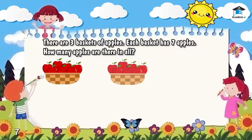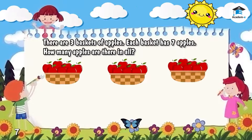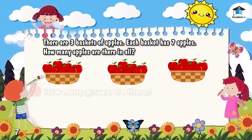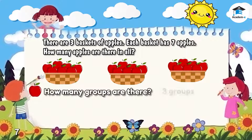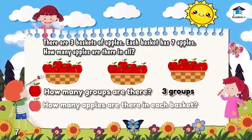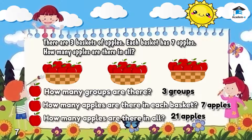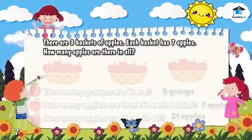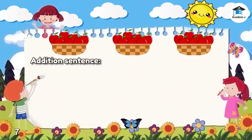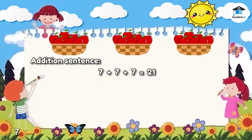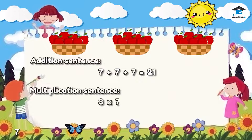There are 3 baskets of apples. Each basket has 7 apples. How many apples are there in all? Questions: How many groups are there? There are 3 groups. How many apples are there in each basket? There are 7 apples in each basket. How many apples are there in all? There are 21 apples in all. In addition sentence, it is 7 plus 7 plus 7 equals 21. In multiplication sentence, it is 3 times 7 equals 21.